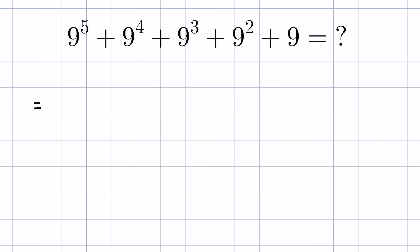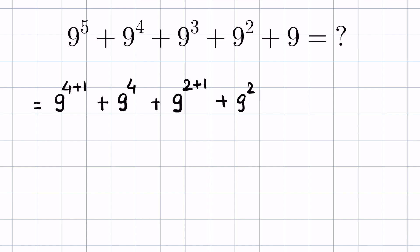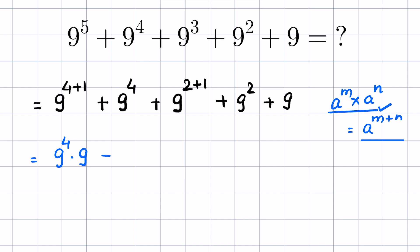So 9 raised to the power of 5 we can write as 9 raised to the power of 4+1, plus 9 raised to the power of 4, plus 9 raised to the power of 3 as 9 raised to the power of 2+1, plus 9 raised to the power of 2, plus 9. Using the identity that a^m × a^n = a^(m+n), we can write 9^(4+1) as 9⁴ × 9¹, and 9^(2+1) as 9² × 9¹, giving us 9⁴ × 9 plus 9⁴ plus 9² × 9 plus 9² plus 9.